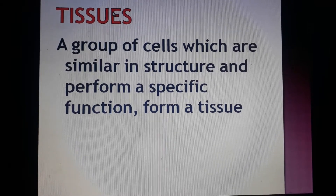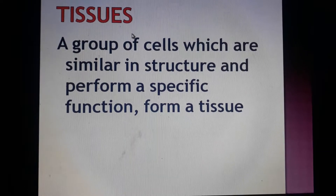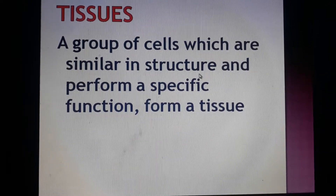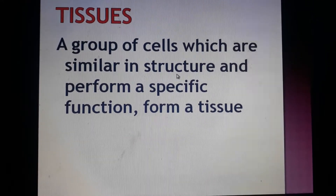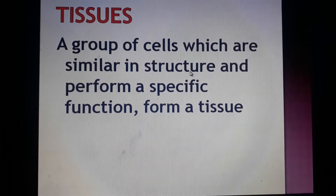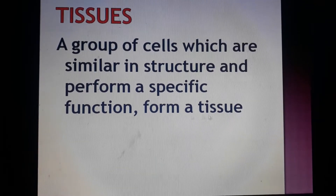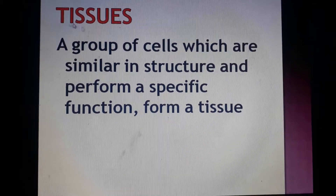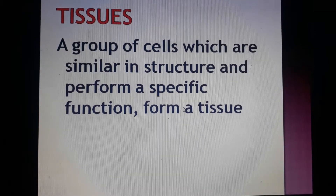So what is a tissue? A tissue is a group of cells which are similar in structure. The group of cells will all have similar structures because they have to perform a specific function. So that group of cells is called a tissue. Please write this definition of tissues in your notebook. A tissue is a group of cells which are similar in structure and they perform a specific function.